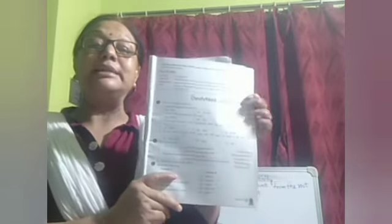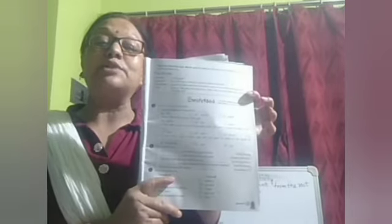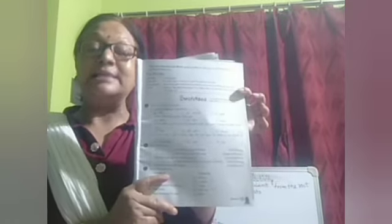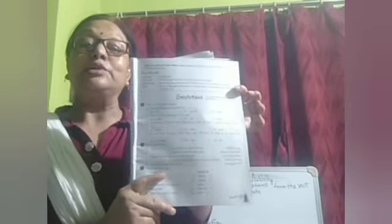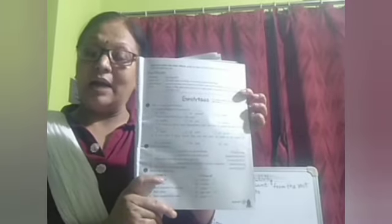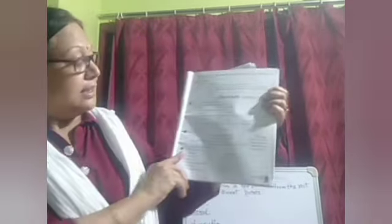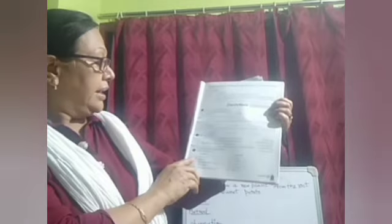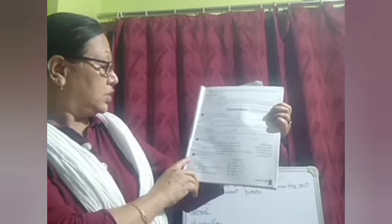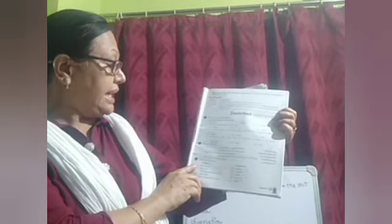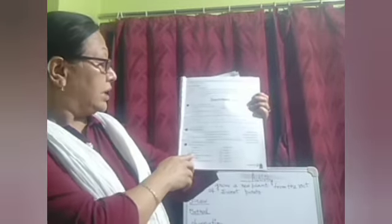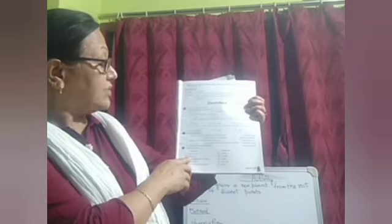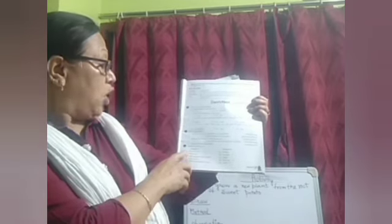The fifth question: the buds of potato are called seedling or eyes. The black spots we can see on a potato are called eyes. So the correct answer is eyes.